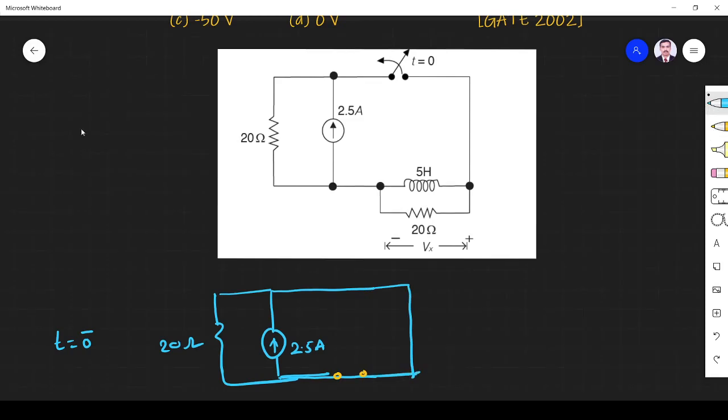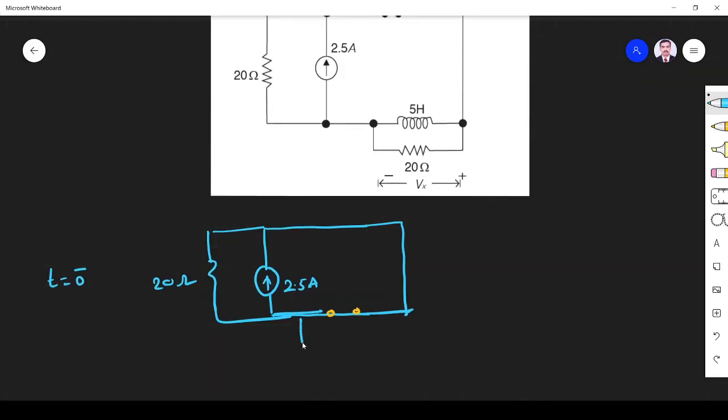So it is 2.5 amps and 20 ohm. Now you see it is closed for long time so it should have reached steady state. For steady state, inductor is short circuit we know. So the inductor is short. Then it will be like this: 20 ohm, minus plus Vx. Now this 2.5 ampere will not take the 20 ohm, it will take only the short circuit path.